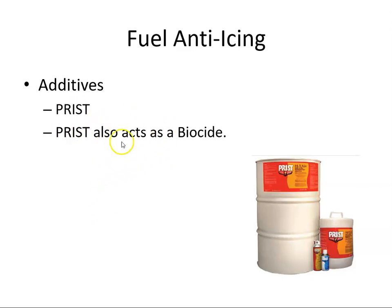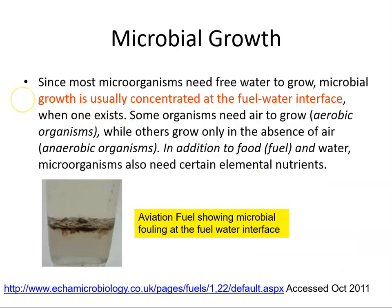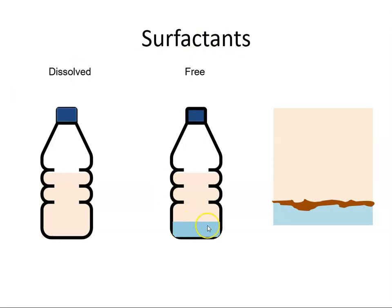One of the additives we can use is a product called Prist. Prist is a biocide, but it also helps prevent the water from freezing — it acts as an antifreeze, stopping or delaying the water from freezing. Not only does it do that, it also kills these microorganisms.